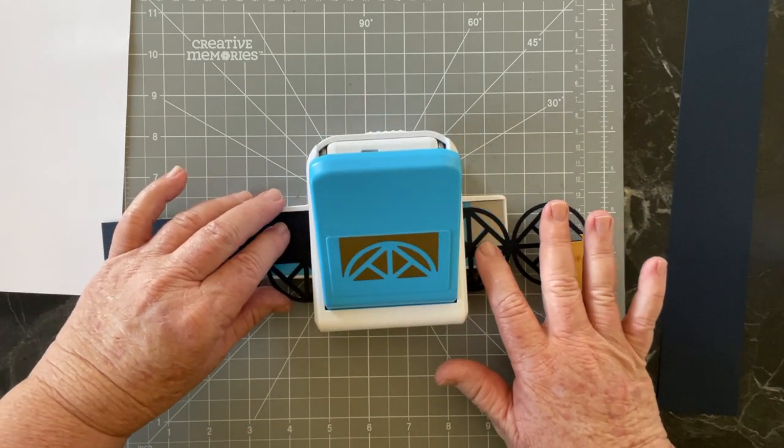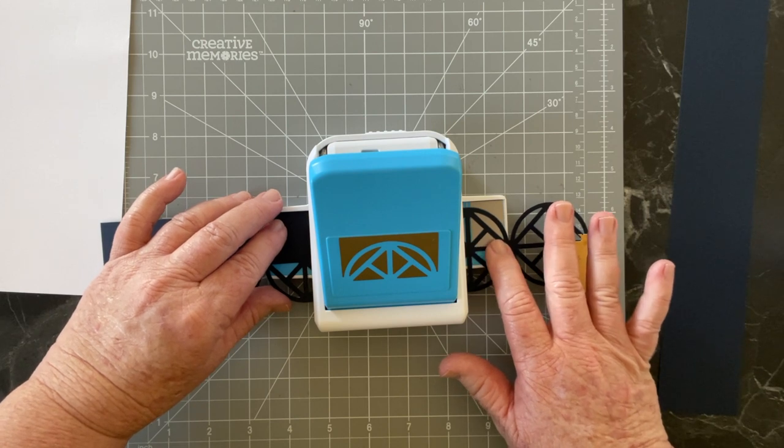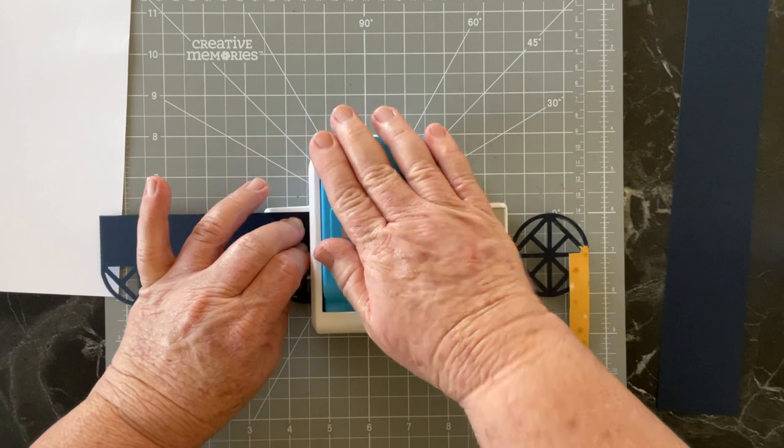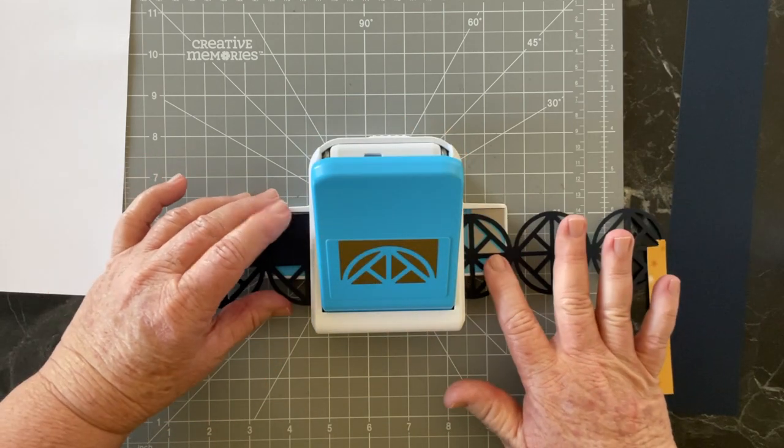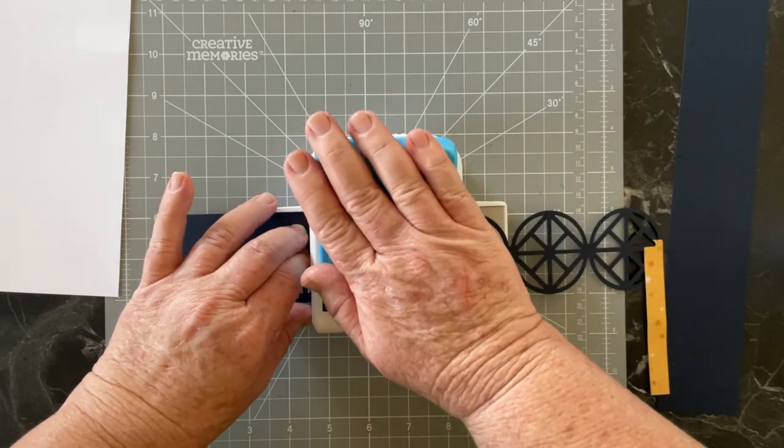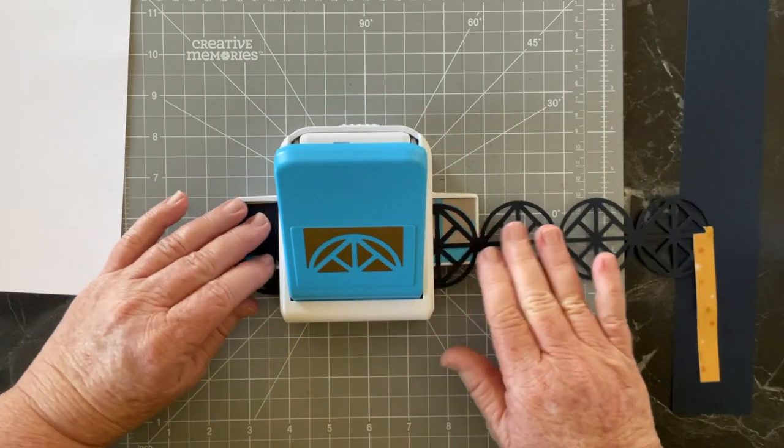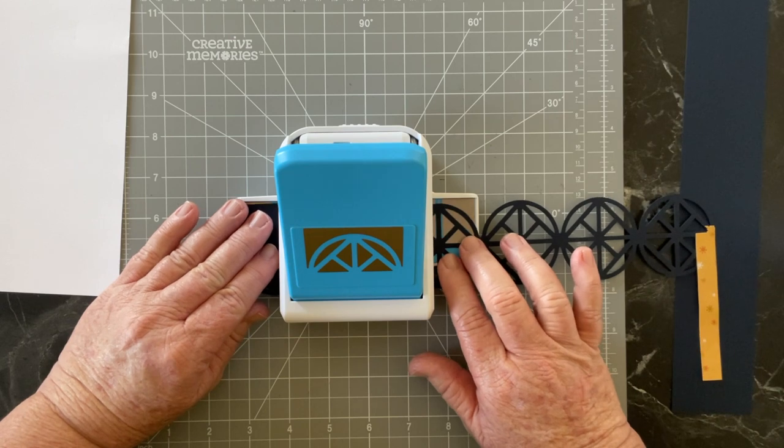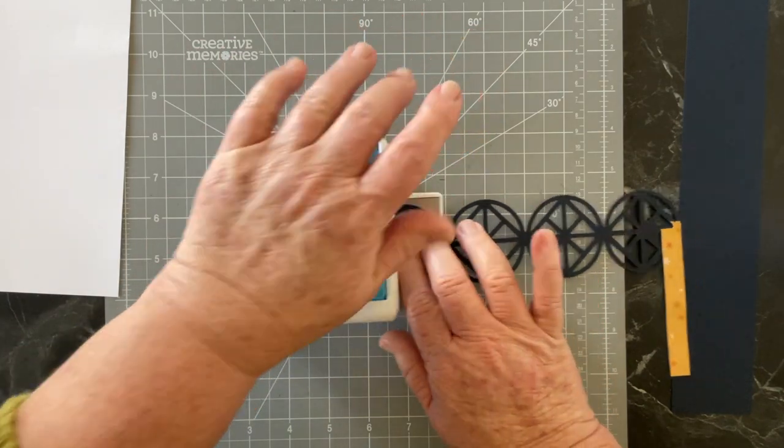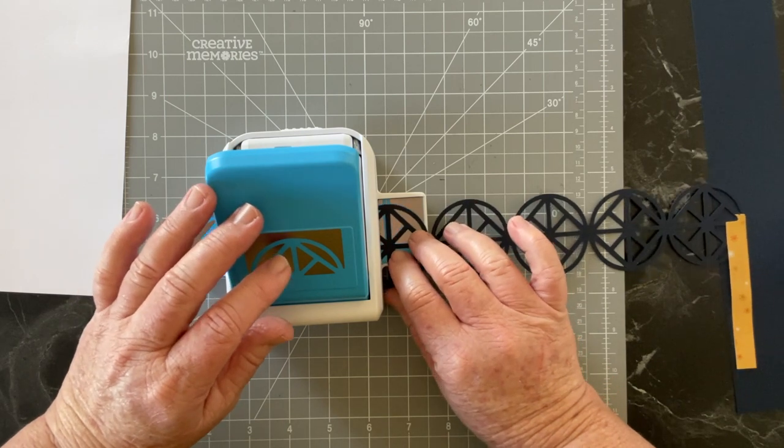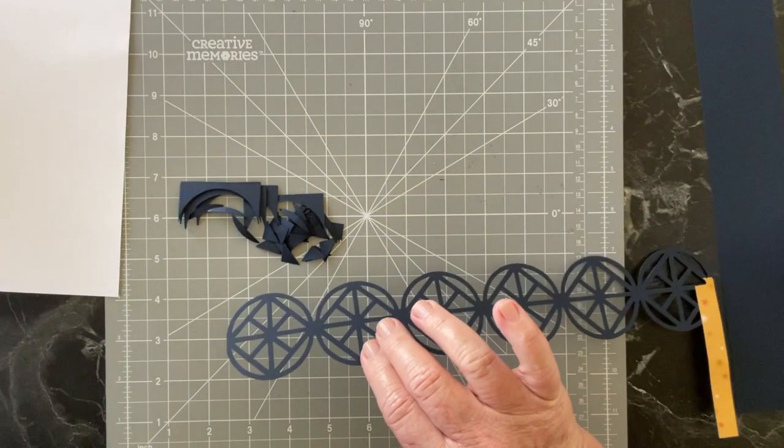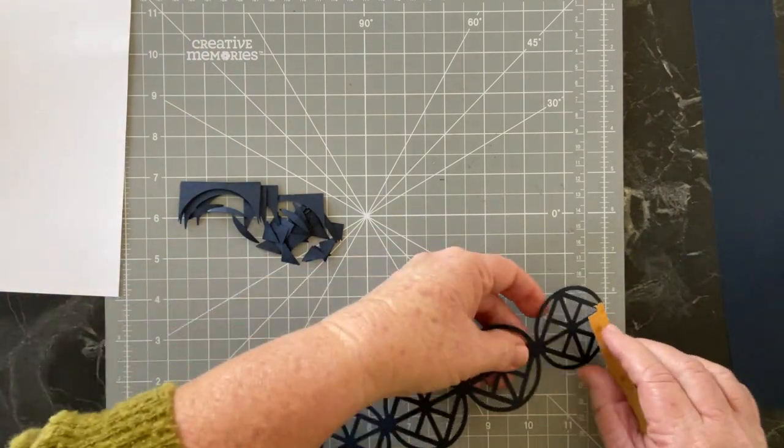And just moving along, you just go into the next one until you get to the end, making sure that it's lined up, pushed right up to the back of the housing part, and punch. We'll continue to punch, making sure it's all lined up. And last one. And there we have it.